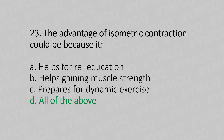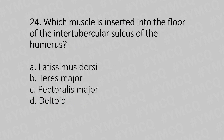Twenty-fourth question: Which muscle is inserted into the floor of the intertubercular sulcus of the humerus? Option A: latissimus dorsi. Option B: teres major. Option C: pectoralis major. Option D: deltoid.